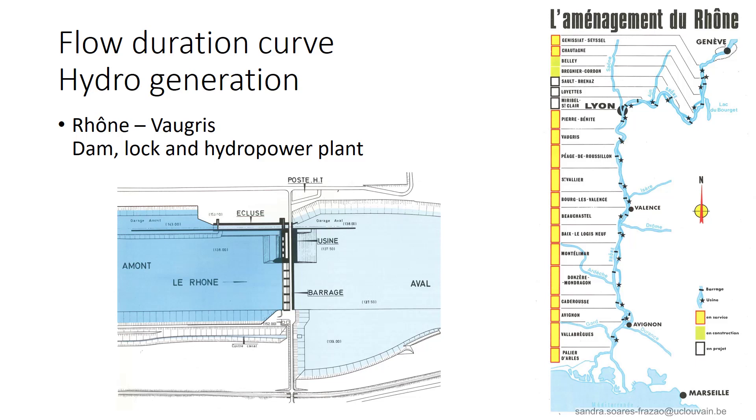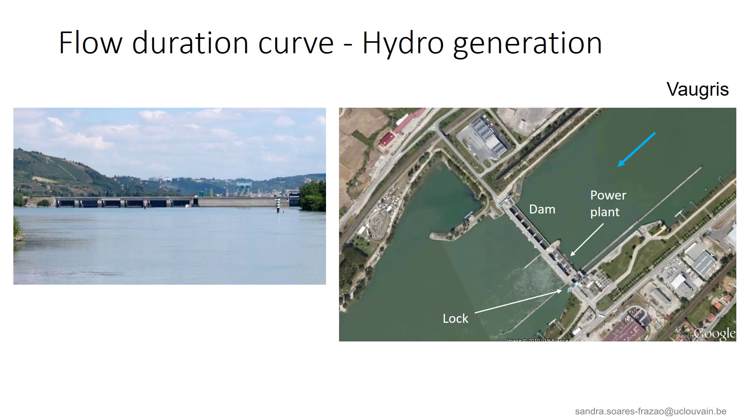Flow duration curves are useful for example in the design of hydropower plants. We will illustrate this with the example of Vaugri on the Rhône river. We can see here the typical layout of a hydropower plant in a river. The dam regulates the discharge in the river and maintains a higher water level in the upstream ridge. Then, part of the discharge is diverted to the power plant and flows through the turbines to produce electrical power. And finally here, a navigation lock allows for the passage of ships transporting goods along the waterway.